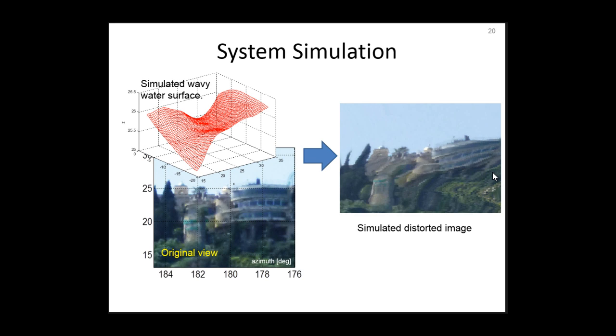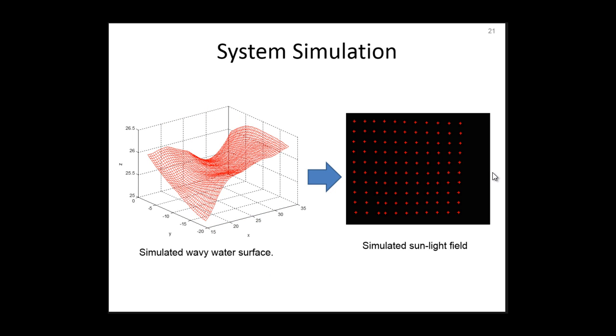We simulate a wavy water surface. Using the simulated surface and the simulated coastal scene, we simulate a distorted image. Using the simulated surface, we simulate the sunlight field.